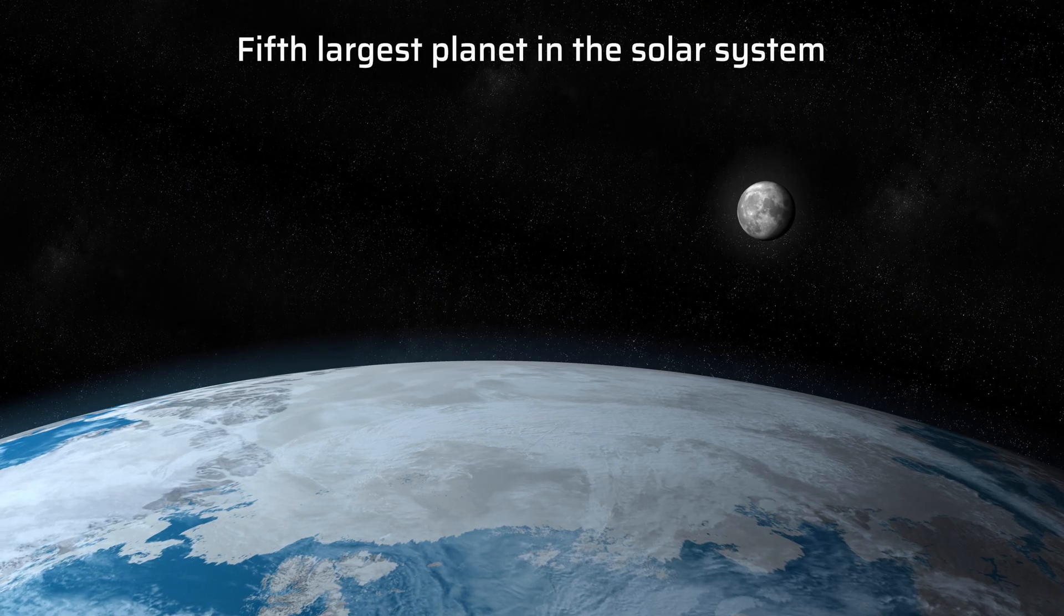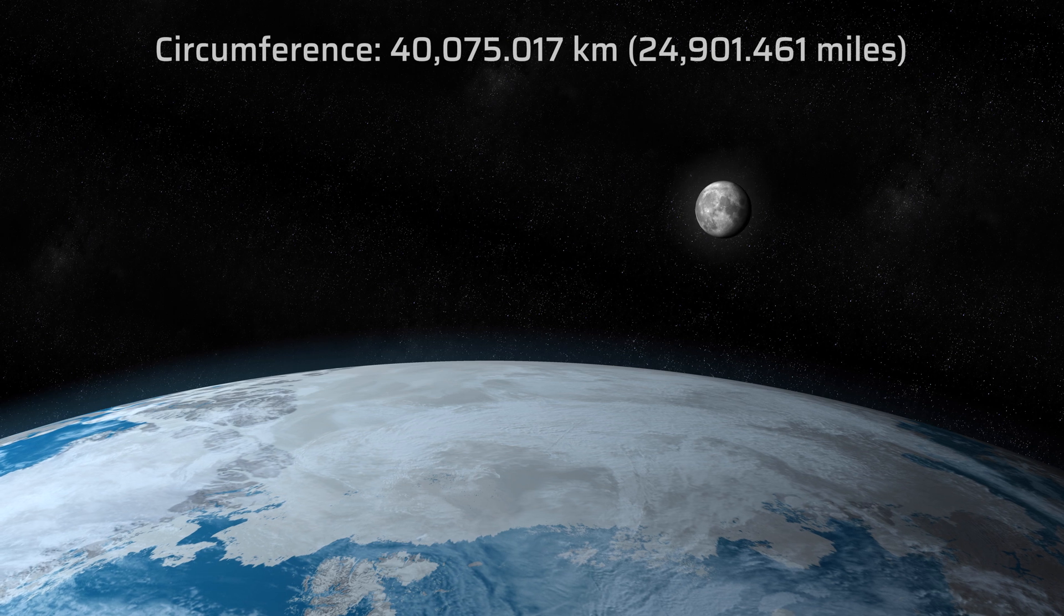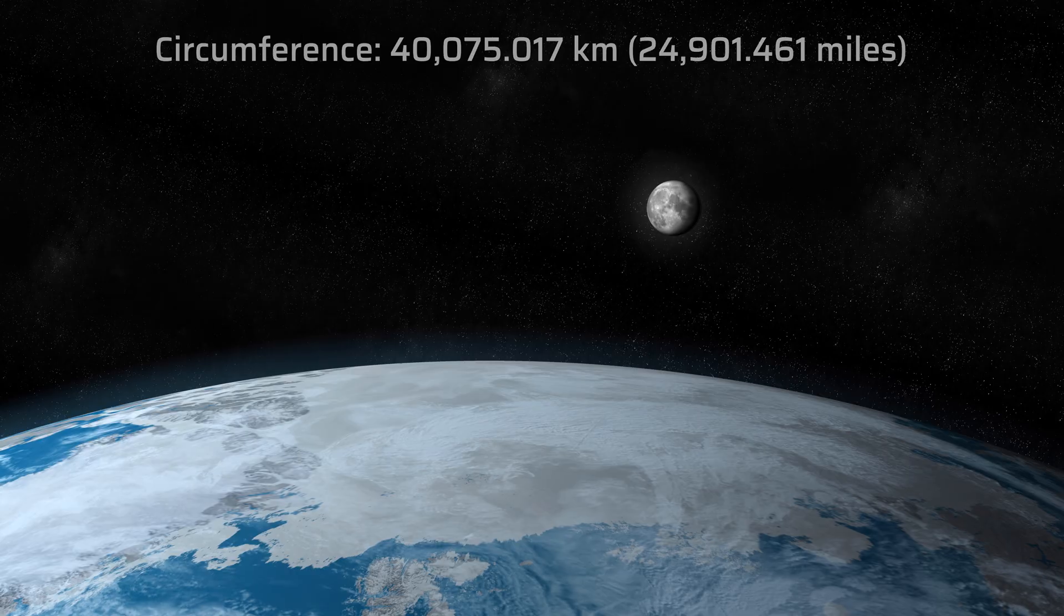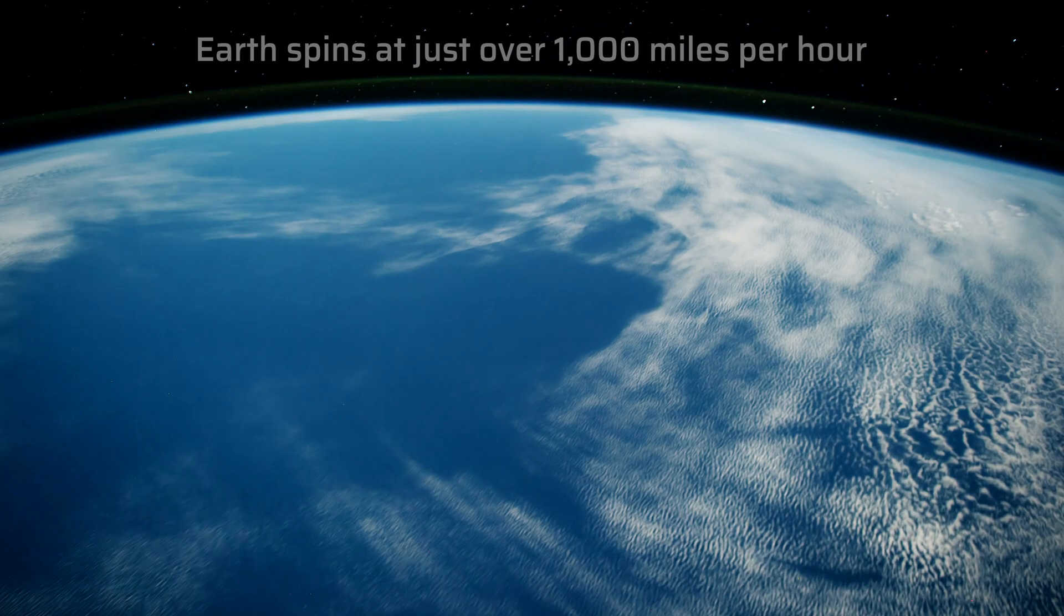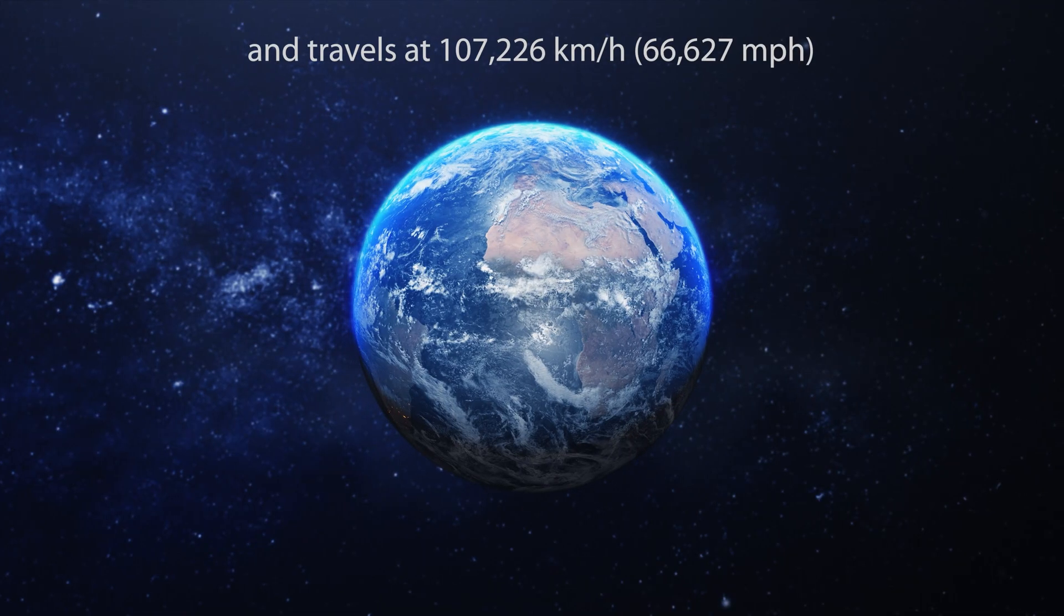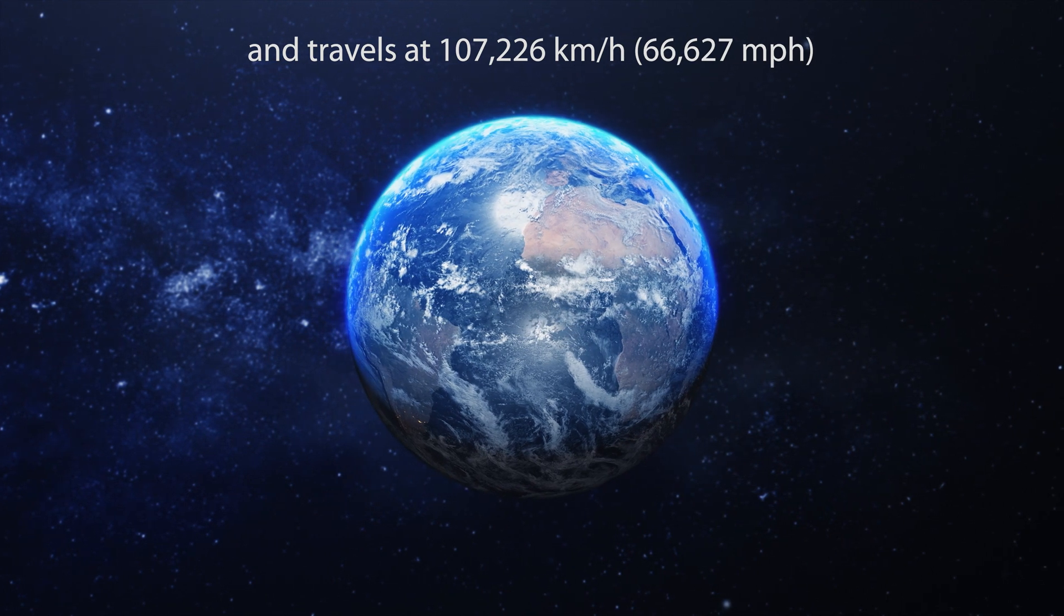Earth is the fifth largest planet in the solar system with a circumference of 24,901.461 miles. It takes 8 minutes for light from the sun to reach our planet. Earth spins at just over 1,000 miles per hour and travels at 66,627 miles per hour.